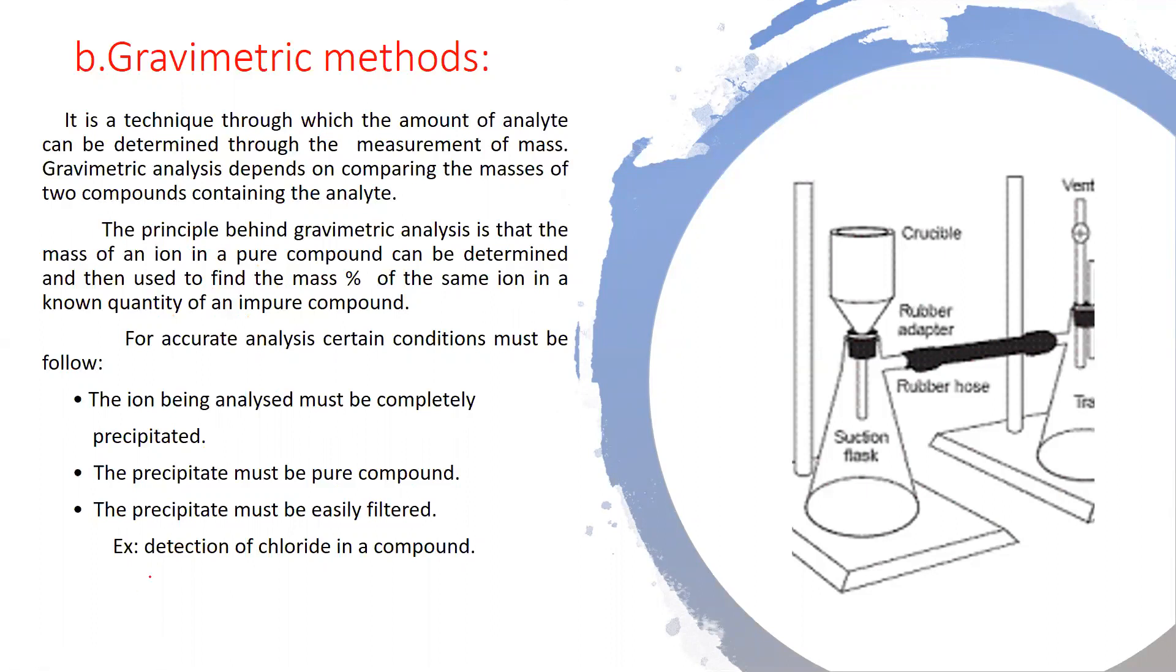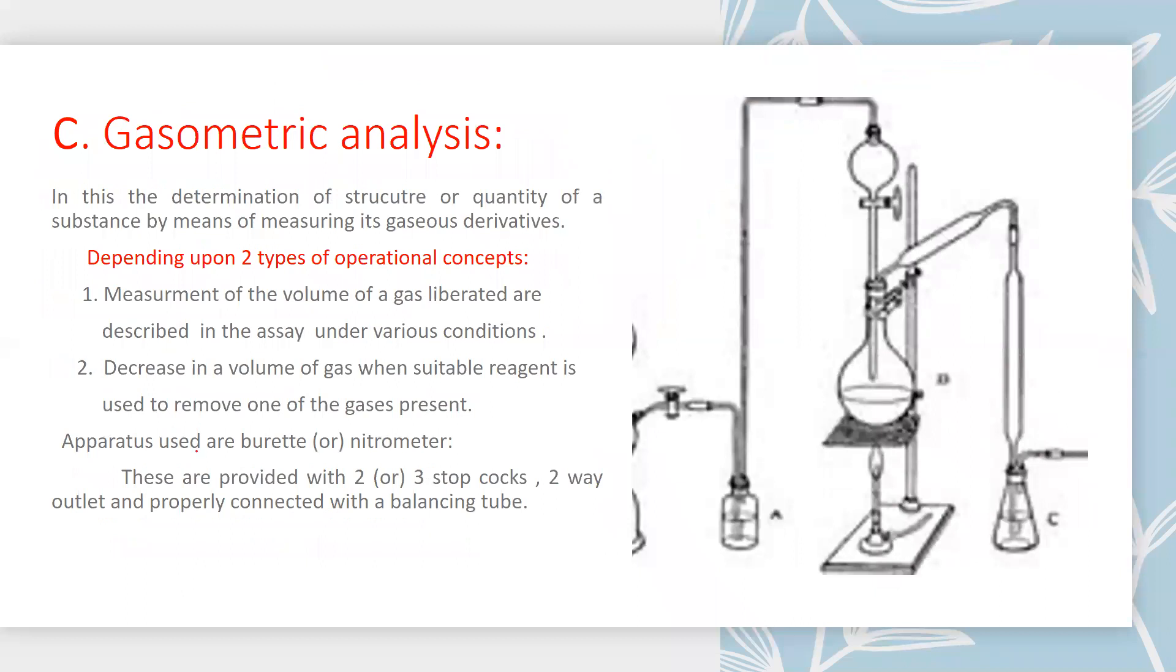An example of gravimetric methods is the detection of chloride in a compound. The third method of chemical analysis is gasometric analysis.